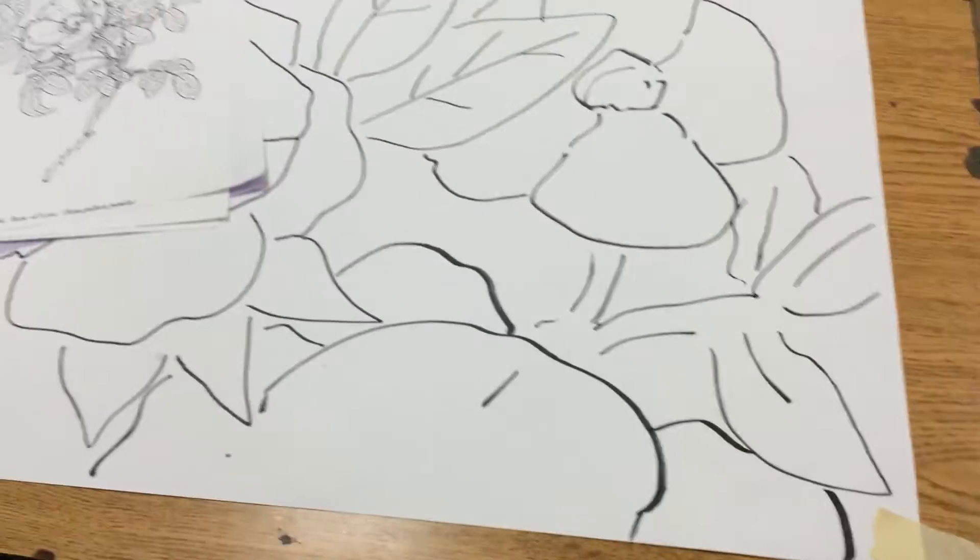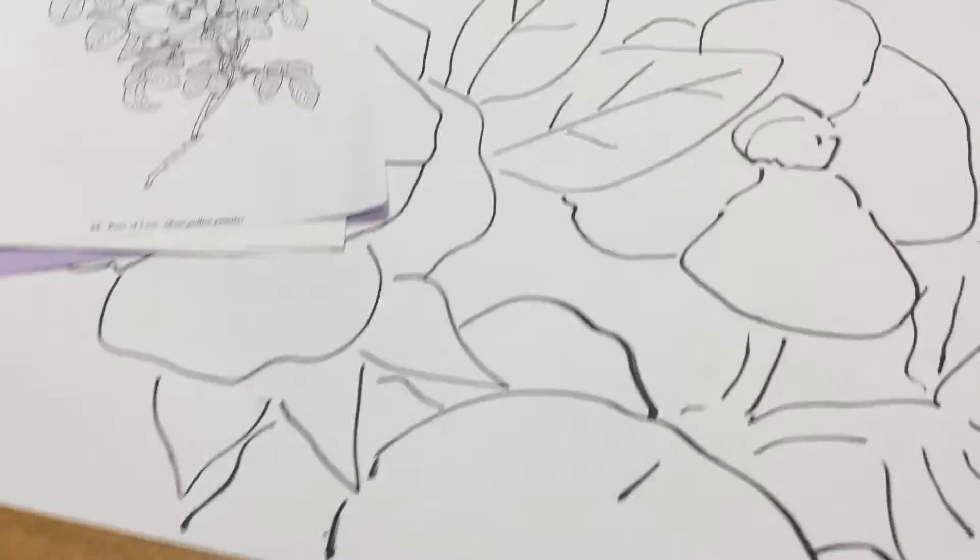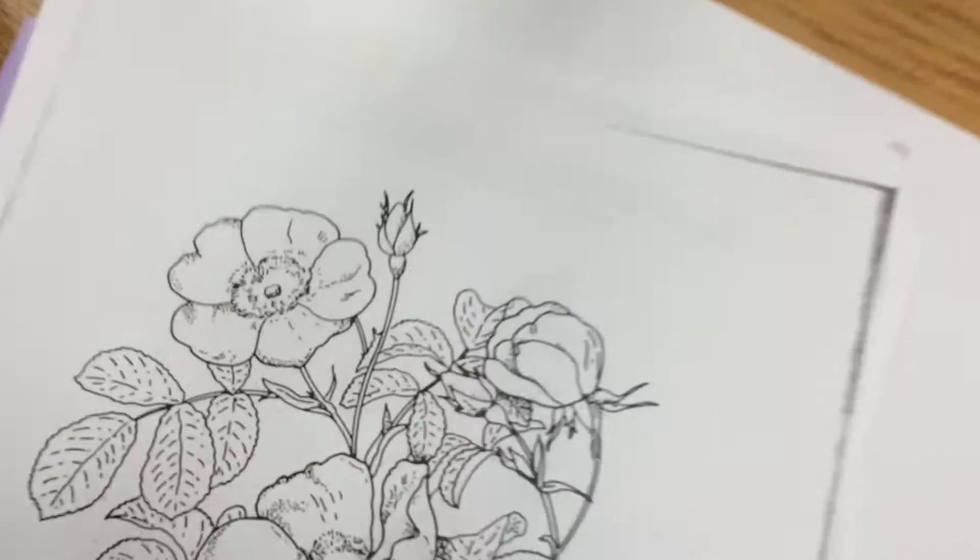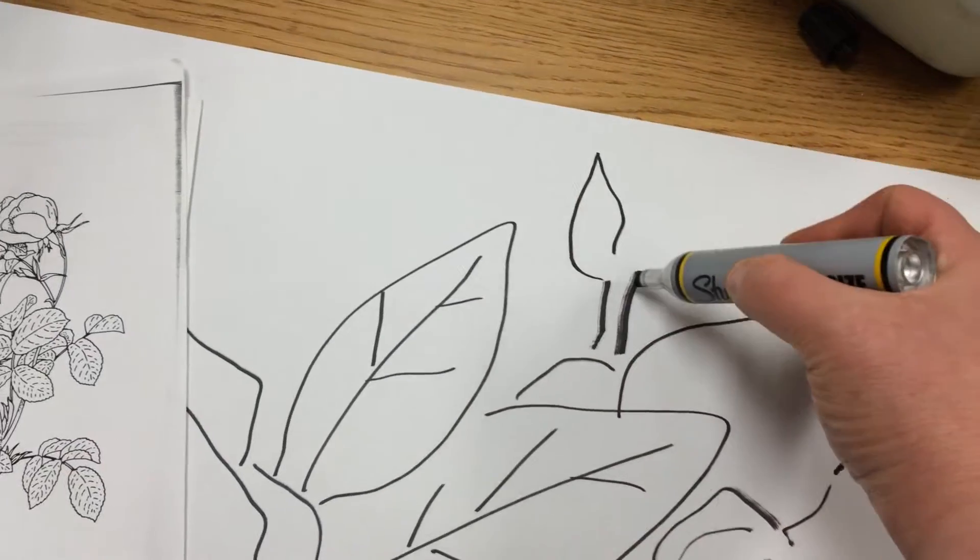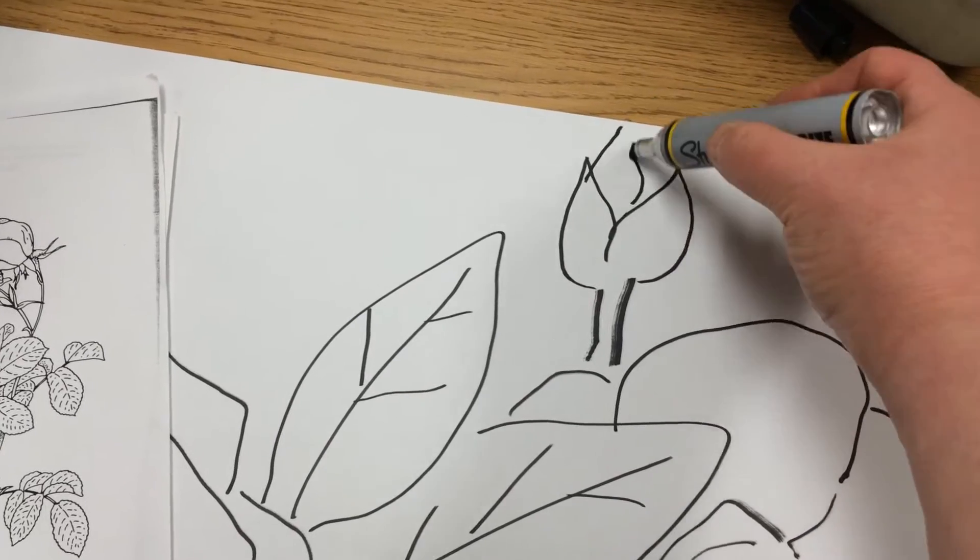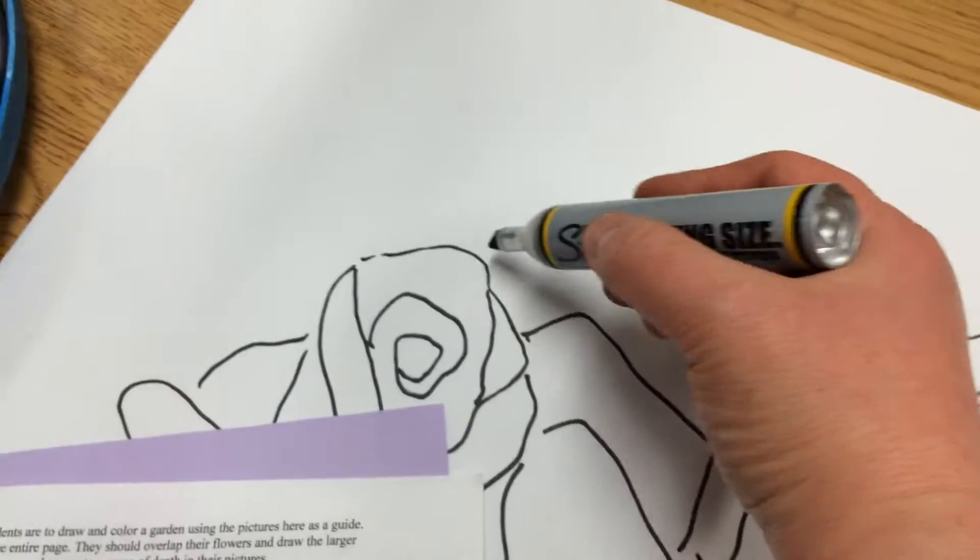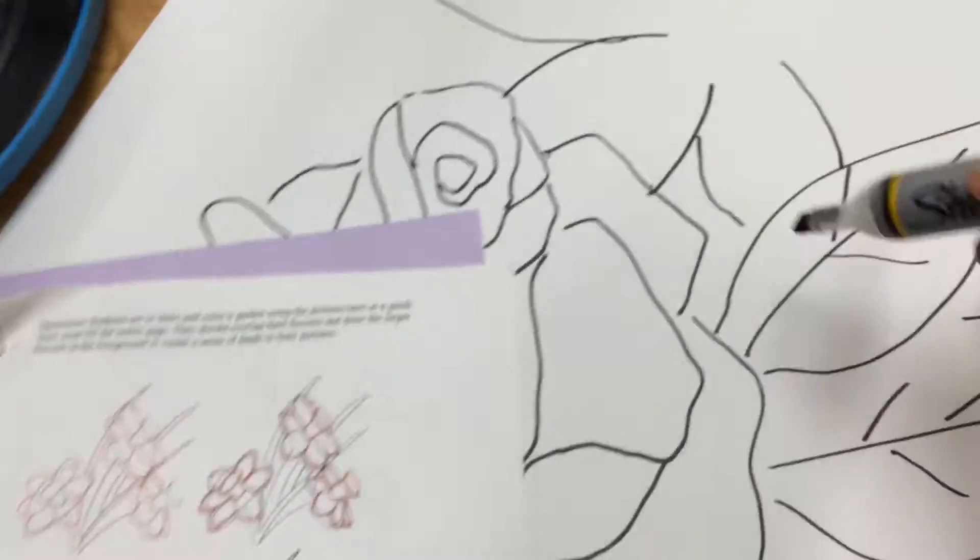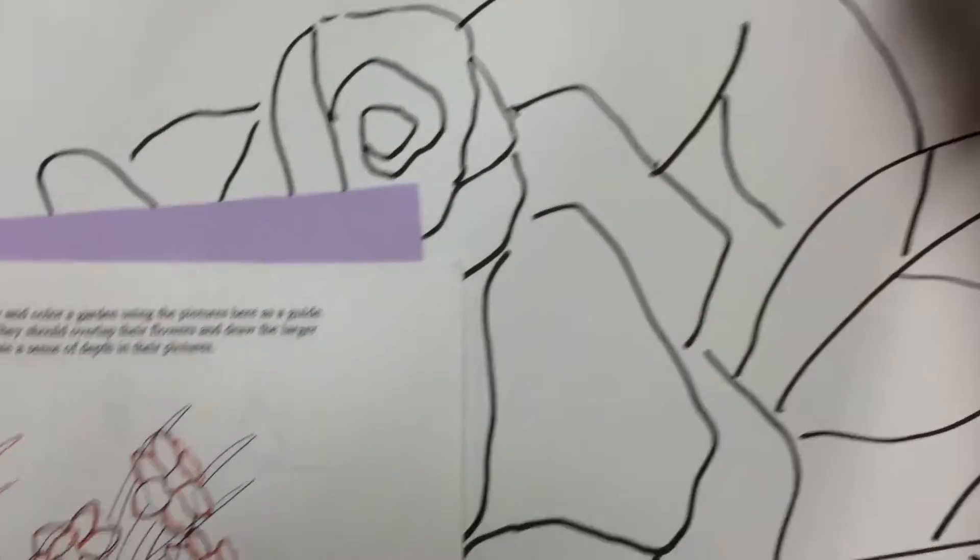Notice how I'm going to the lines that I already drew and I'm stopping at the edge of them, and I'm starting at the edge of lines I already drew and coming out from behind them to give the illusion that one flower is in front of another flower. In that way I'm going to fill my page with five different flowers.